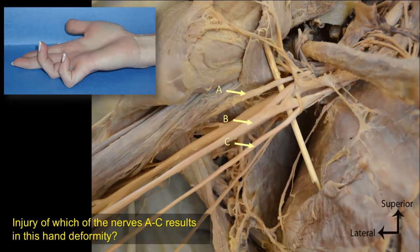Injury of which of the nerves A to C results in this hand deformity? This is a claw-hand deformity resulting from a long-standing injury of the ulnar nerve.